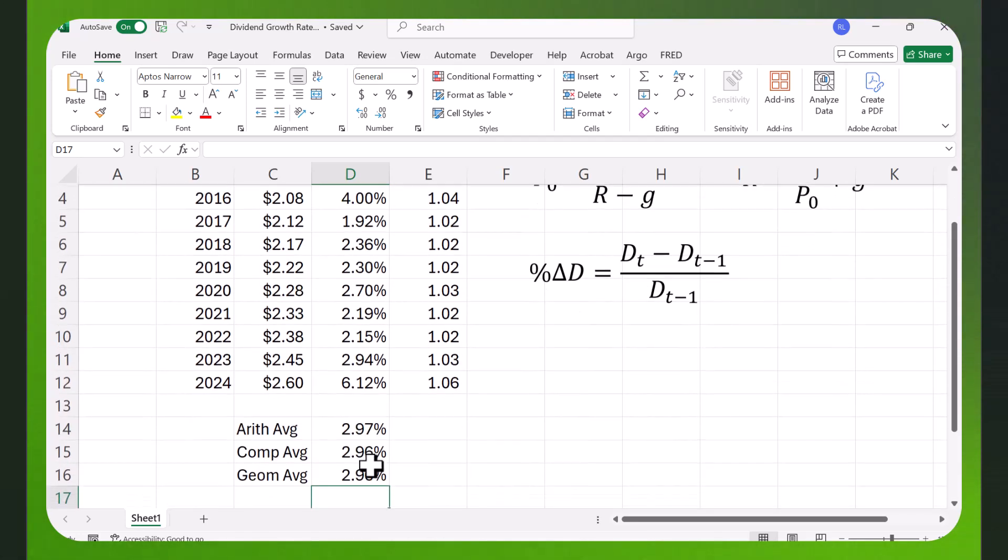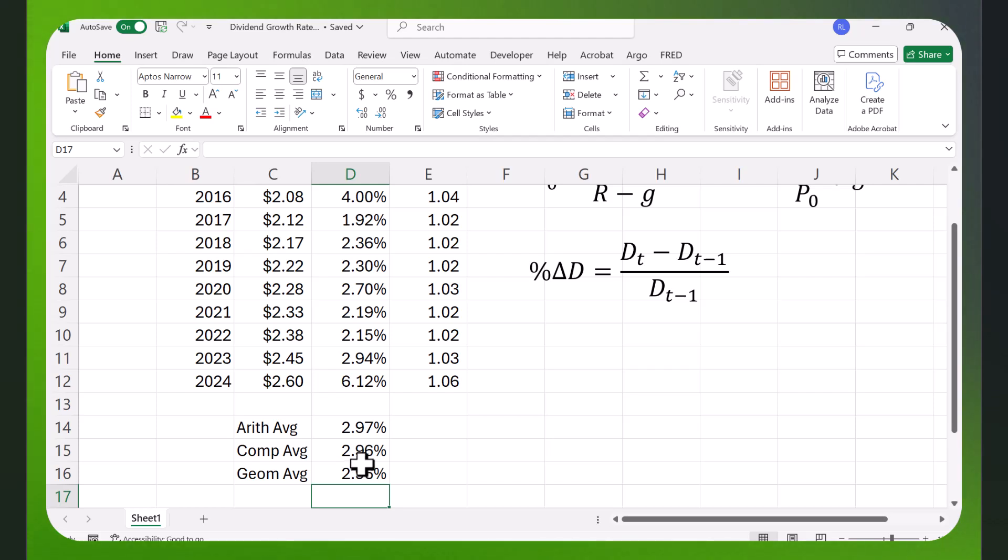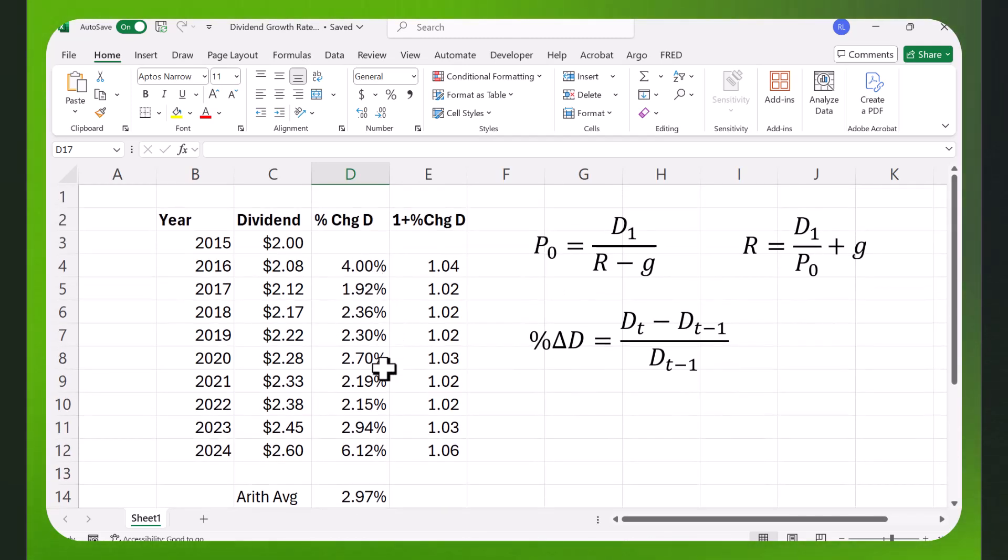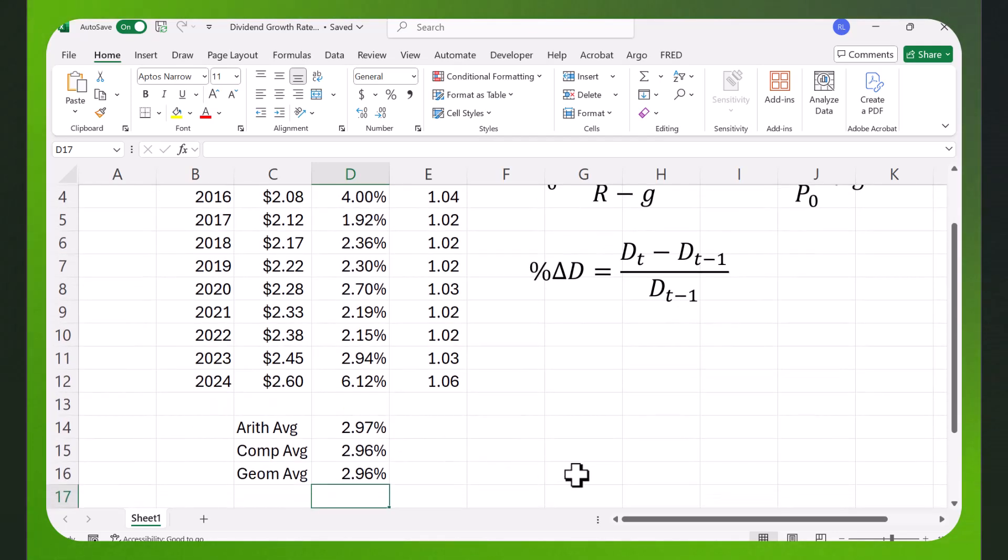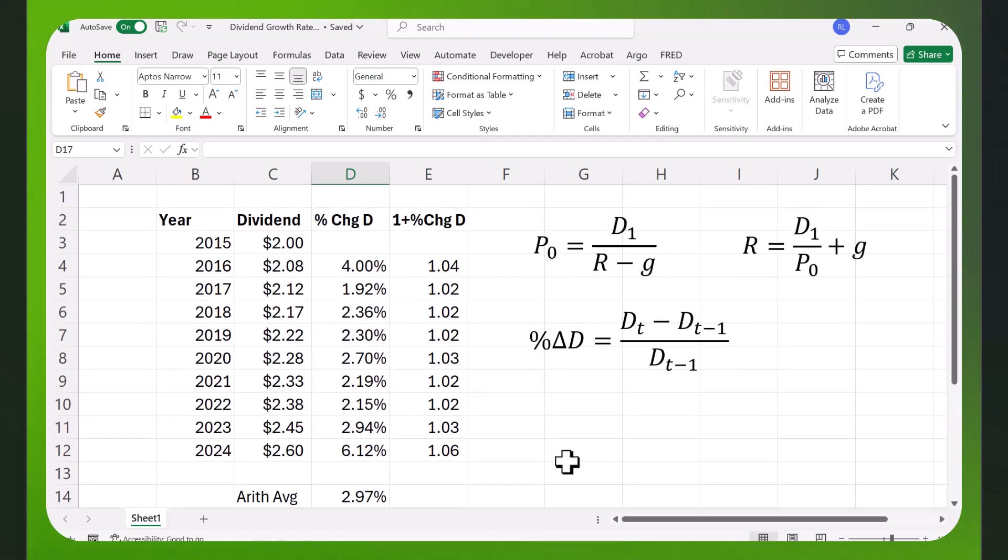If you use the present and future value approach, that is the rate function, you're going to get 2.96%. If you just add up all of these and divide by 9, you're going to get 2.97%. So those are two ways to calculate the dividend growth rate, which you can use in these different formulas. I hope you found this useful, and thanks for watching.